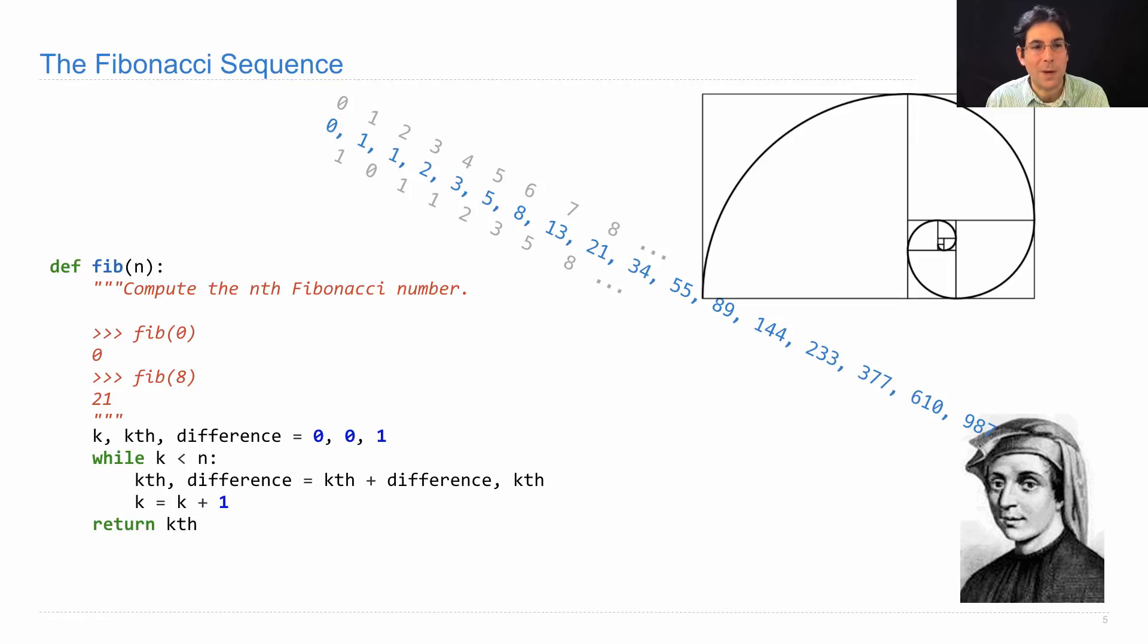Here's one way to compute the Fibonacci sequence. You start out by saying, which Fibonacci number have I computed already? K will increase according to this sequence: 0, 1, 2, 3, 4, 5, 6, 7, 8. The kth Fibonacci number is one of these: 0, 1, 1, 2, 3, 5, 8.